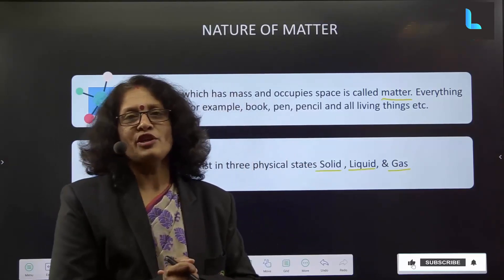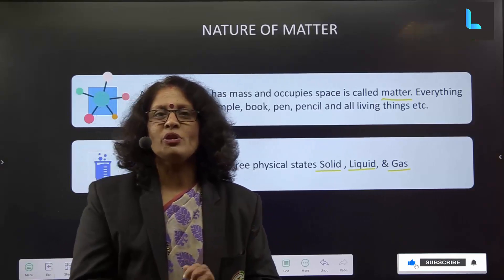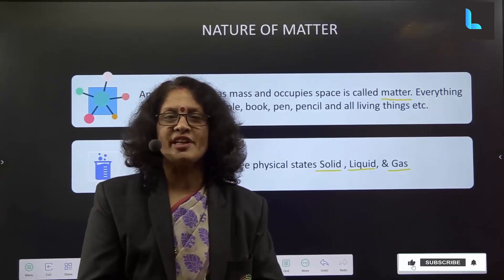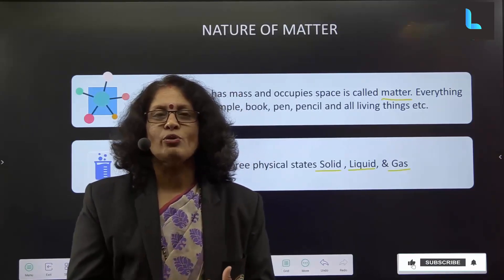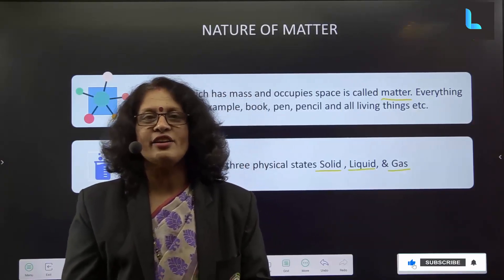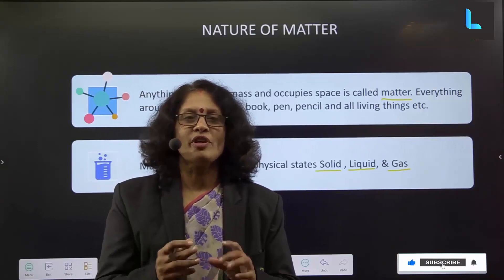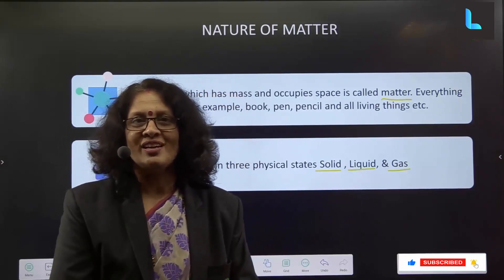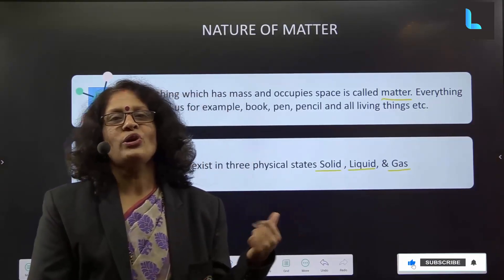Liquids have definite volume. Volume can be measured in different units. For example, you are familiar with milk — 1 litre, 2 litre, half litre. Litre is the measurement unit for liquids. Smaller units are millilitres, higher units are litres, and very high units are cubic metres. The particles in liquids are arranged in a loosely packed arrangement, and the force of attraction between particles is comparatively very less than in solids.